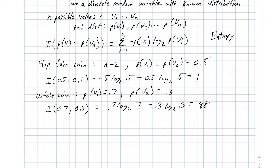This means I need a fraction of a bit to encode the result of the coin flip. Fractions of bits don't make sense individually, but if I'm flipping this coin many many times and have a sequence of results, then I need 0.88 times the number of coin flips to communicate optimally this sequence.